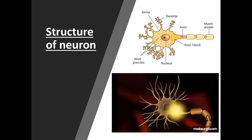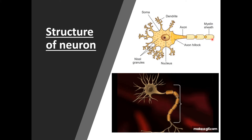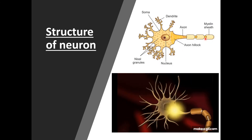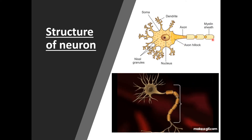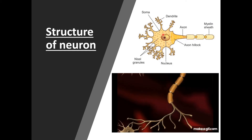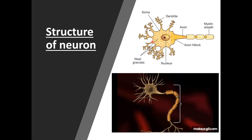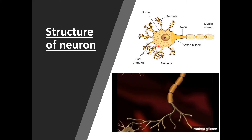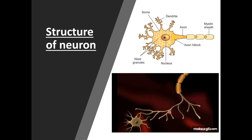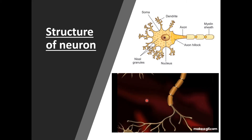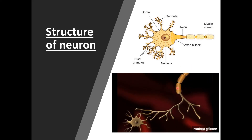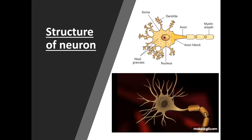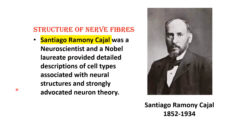In the axon hillock and axon there is an absence of Nissl granules. Dendrites can be clearly differentiated from the axon because in the axon Nissl granules are absent, while in dendrites and soma they are present. Because of the Nissl granules the soma has a tigroid or spotted appearance. The scientist Cajal provided a very detailed description of all cell types associated with neural structures and strongly advocated the neuron theory.